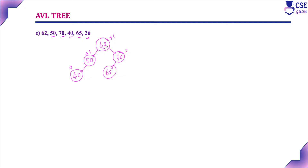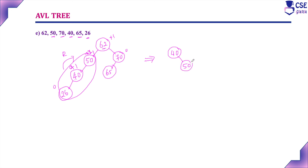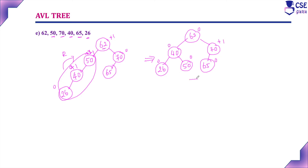Next, insert 26. 26 is less than 62 — go to its left child. 26 is less than 50 — go to its left child. 26 is less than 40 — insert 26 as the left child of 40. Now the balance factor gets affected: 0, +1, +2 on the left side. The tree is unbalanced. Perform a single right rotation on the subtree. After rotation, 40 becomes the root node, 26 becomes its left child, and 50 becomes its right child. 62 and its right subtree (70 and 65) remain as is. Balance factor for all leaf nodes is 0; for the subtree root it is 0 and +1 overall. Now it is balanced.